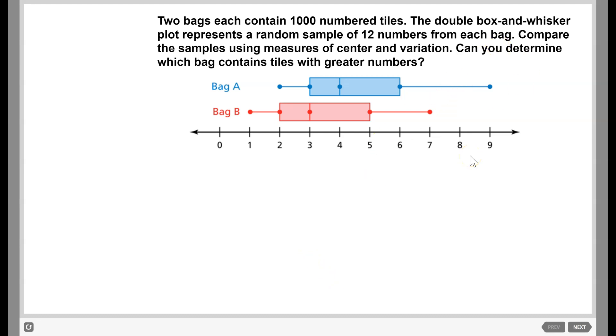Basically, we're going to say, can you determine which bag contains tiles with greater numbers? We really can't. For this example, our sample is too small. We've only done 12 numbers out of 1000 total. So it's a very small sample and a lot of variability. So while bag A has a larger median, 4, than bag B, 3, there's really not enough data here and too much variability for us to confidently draw any conclusions.